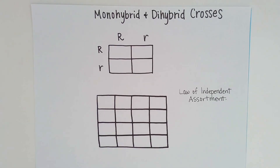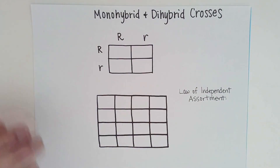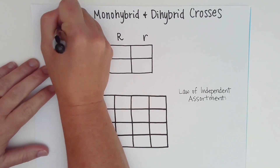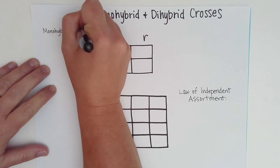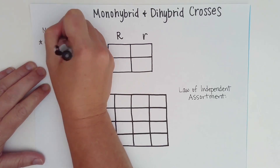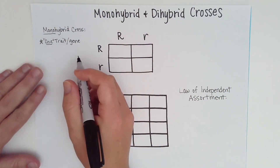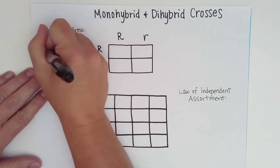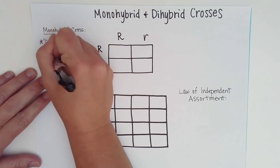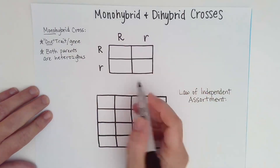A monohybrid cross is one that deals with just one trait. In simple Mendelian genetics, a trait is associated with one gene — that word 'mono' is why we know it's one. And 'hybrid' means that both parents are heterozygous for the trait being studied.